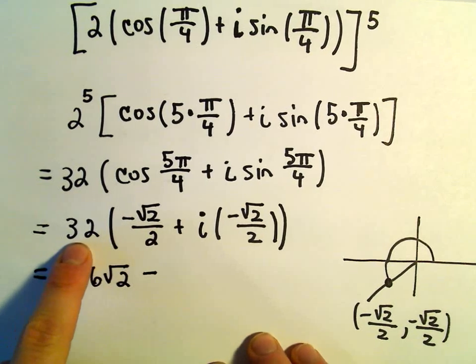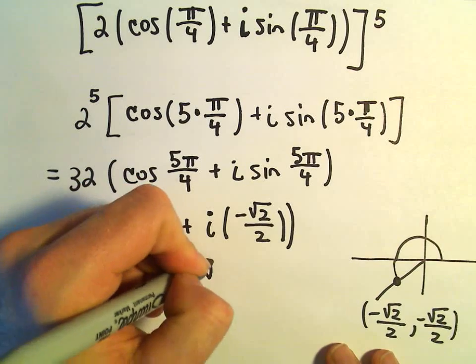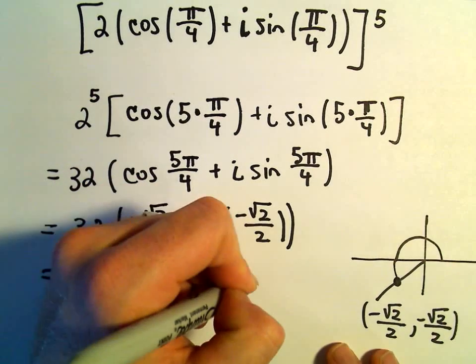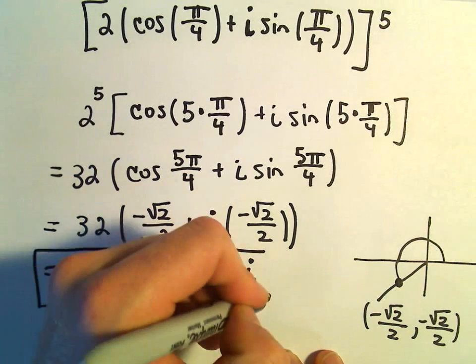Again, when we distribute out the 32, we'll get 32 over 2 for 16 times the square root of 2. And then let's not forget our i, and that would be our nice final solution. Thank you.